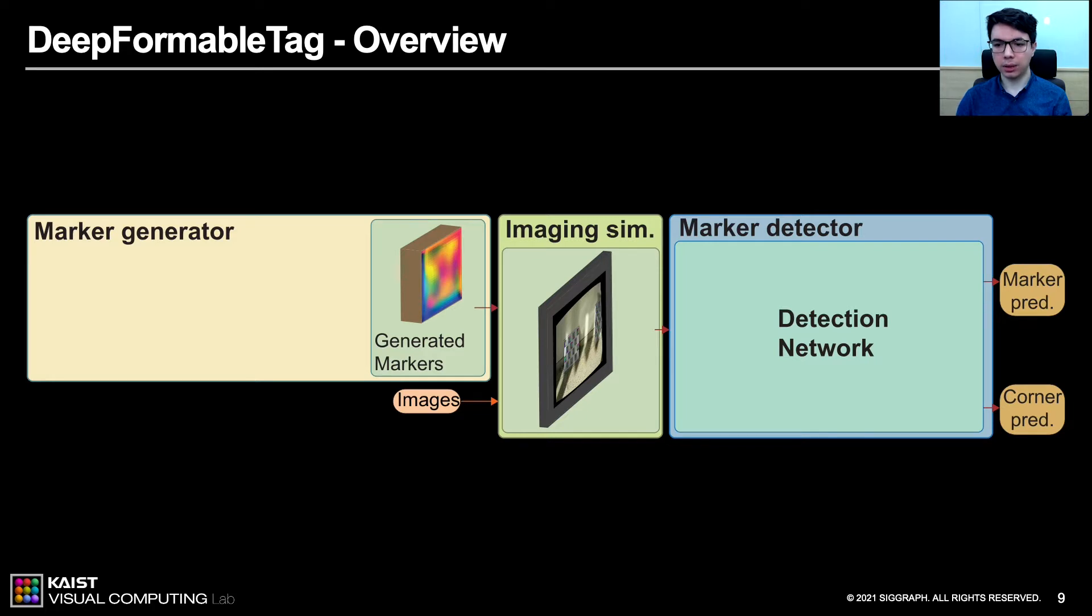Our data-driven fiducial marker system bridges the generation and detection blocks with a differentiable imaging simulator. Our training process consists of three main parts. First, our convolutional marker generator creates unique marker patterns through the network. Next, our photorealistic imaging simulator renders markers in the provided images, simulating the real-world conditions. And finally, our detection network detects the markers in the scene. Our system is trained in an end-to-end manner with differentiable operators. This enforces marker generator to produce easily and robustly detectable markers for the detection network.